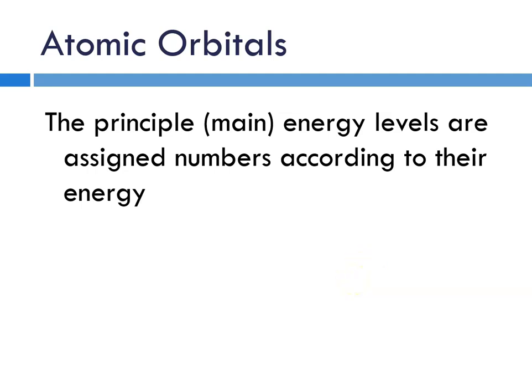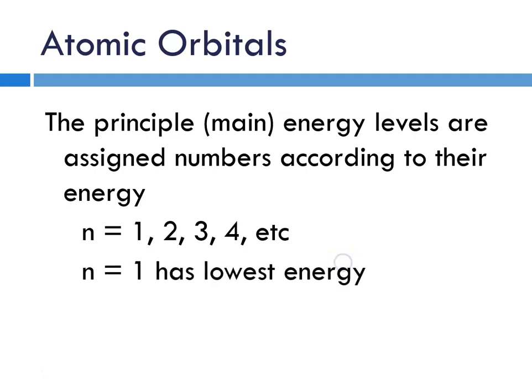We begin with the principal or main energy levels. And they're assigned numbers according to their energy. And the numbers are integers. N equals 1, 2, 3, 4, and they go up to 7. Where N equals 1 is the lowest energy, the closest to the nucleus. And as you increase number, you're increasing energy and distance from the nucleus.